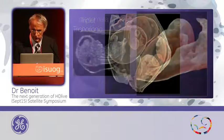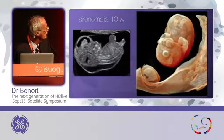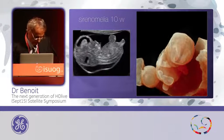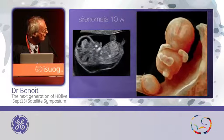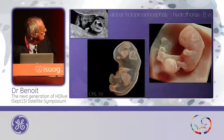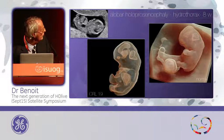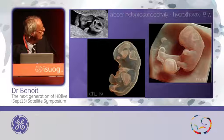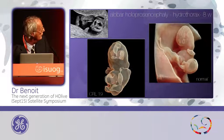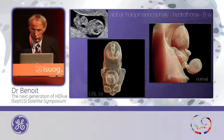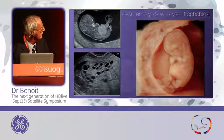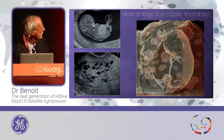Some examples in cases of malformation. This was a case of sirenomelia at ten weeks of pregnancy — the brain was normal, but also with club feet, club hand, and only one leg, and this is a part of the tail. Alobar holoprosencephaly at eight weeks of pregnancy: this is a normal one, and this is this case — a single frontal ventricle compared to the two normal lateral ventricles. This was a dead embryo at nine weeks with a cystic trophoblast — we increase the silhouette and you can see all the cystic parts within the trophoblast.